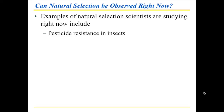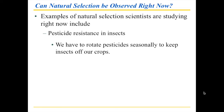Pesticide resistance in insects, for example, is extremely obvious. If you spray a particular type of pesticide one growing season, the rules basically say don't spray the same pesticide the next season because it might be less effective. Some insects you're trying to kill may actually have resistance, and if they're the only ones left, they and their offspring will be the ones still present. So we have to rotate pesticides to keep insects off our crops.